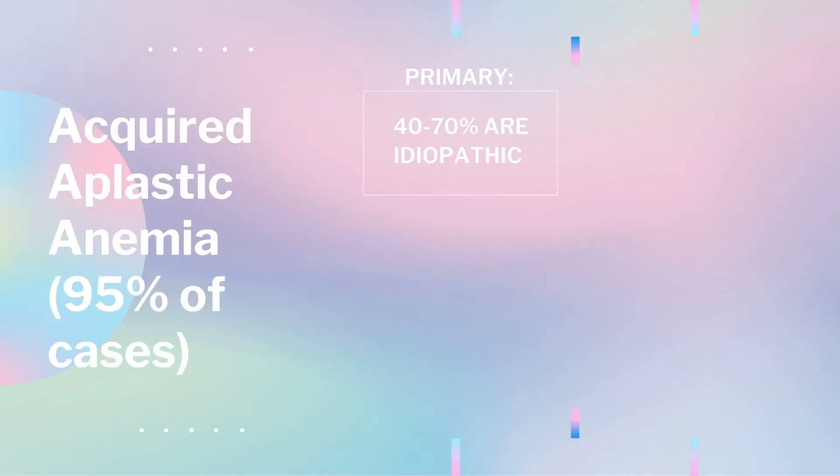There are two divisions of aplastic anemia: acquired and congenital. For acquired aplastic anemia, 40 to 70 percent of it is actually idiopathic or primary. Primary aplastic anemia is idiopathic — we don't know what caused it, it just happens.